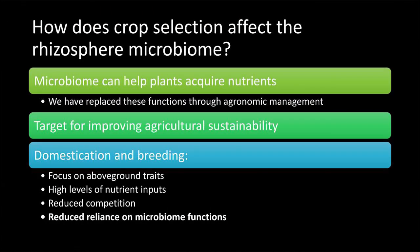How does crop selection affect the microbiome? The microbiome can help plants acquire nutrients and impacts plant health and competitive interactions among plants. In modern agricultural systems we've replaced many microbiome functions through nutrient inputs and other agronomic practices. However, if we want to promote sustainable management, we need to increase our reliance on microbial functions that contribute to crop productivity, replacing those inputs with microbial functions like nitrogen fixation or mineralization. The microbiome is a really attractive topic for efforts to improve agricultural sustainability, but efforts to improve below-ground interactions have overlooked a critical component.